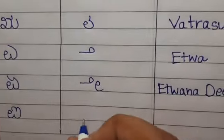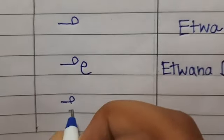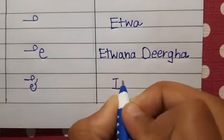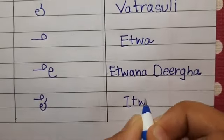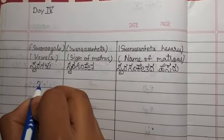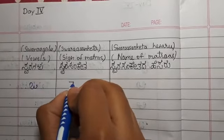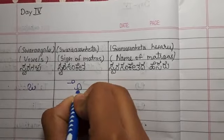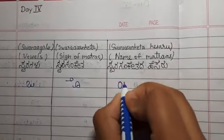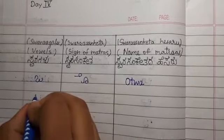II is equals to Aithwa. Matra of I is Aithwa. OO is equals to Aithwa. Matra of O is Aithwa.